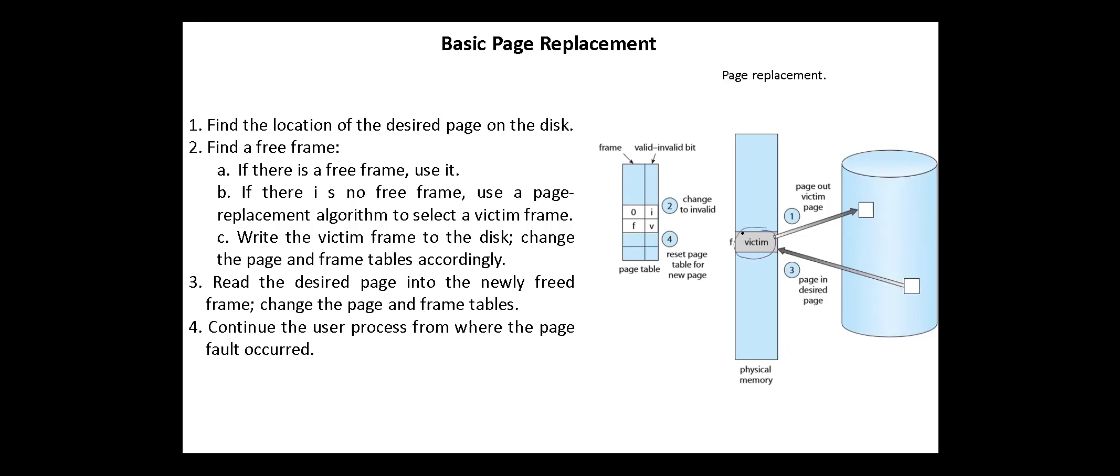To select a victim frame, the victim frame is swapped out into the disk and the page table for this process is updated accordingly. Next, the desired page is swapped in into the newly freed frame, and again the page table for this process is updated to reflect this action. The frame number is stored in the frame field and the valid-invalid bit is set to valid. After that, we can continue the user process from where the page fault occurred.